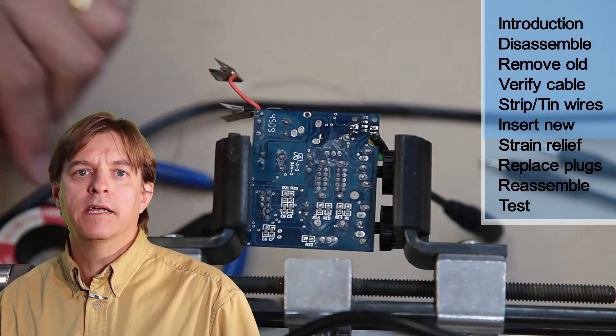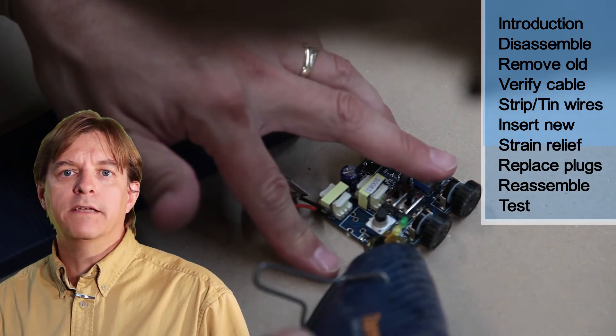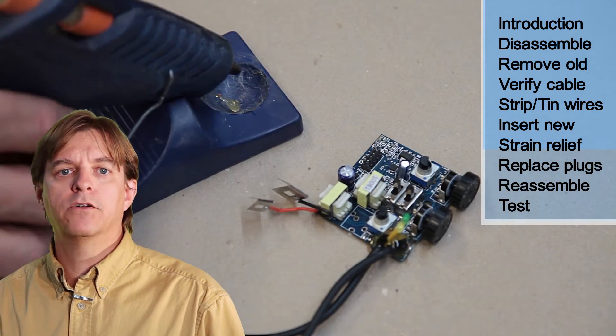That finishes the electrical side. Now a dab of hot glue makes it a mechanical connection to act as a strain relief so there's no undue stress on the solder joint.